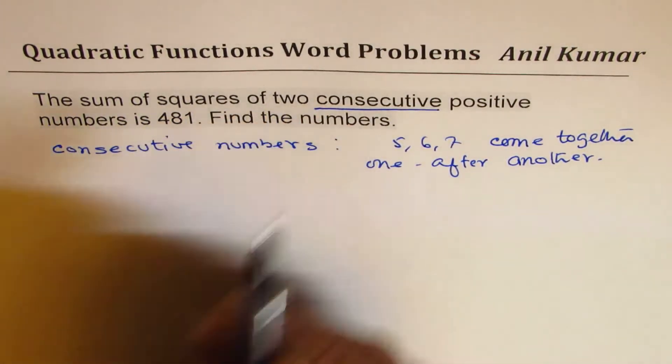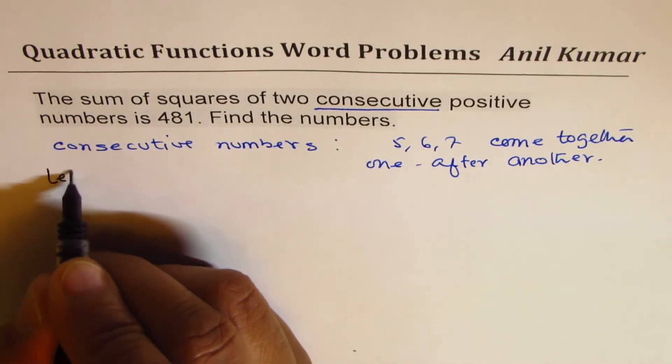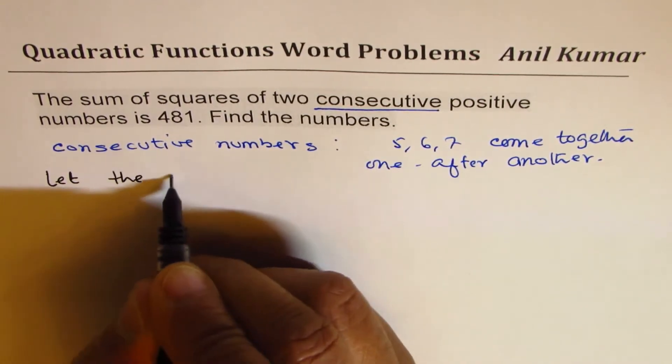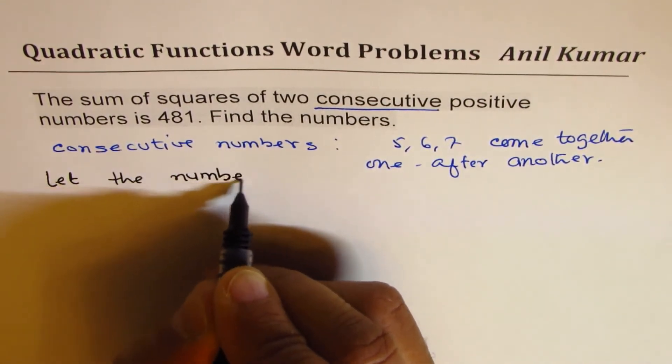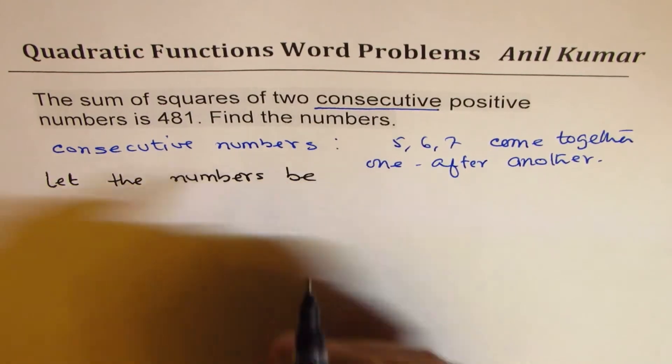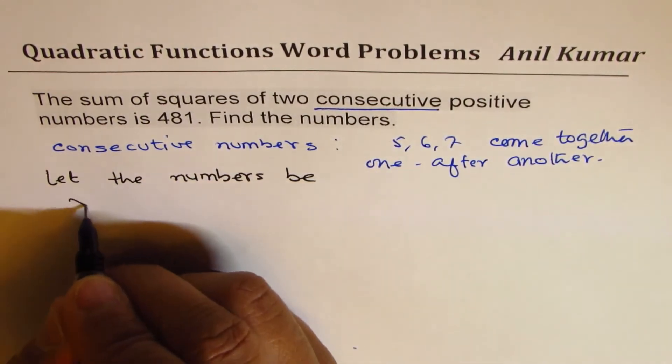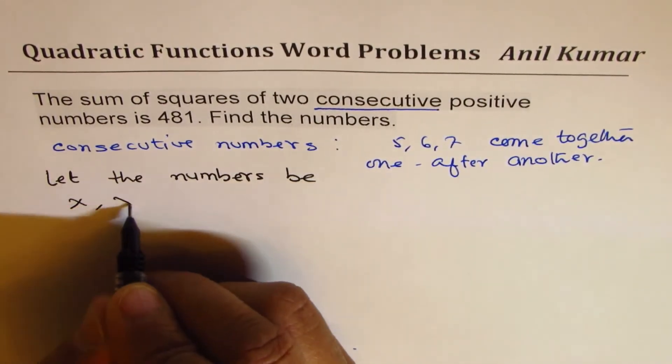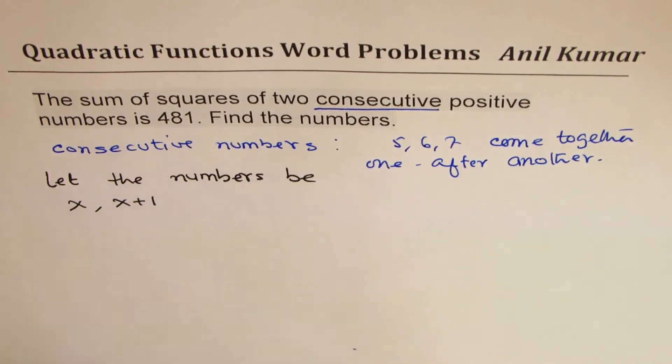So how do we define such numbers? We can see, let we want sum of consecutive two numbers. We say let the numbers be - if I say one number is x, what is the other number? It is x plus 1.